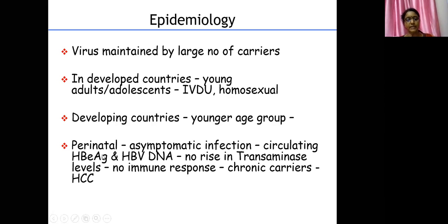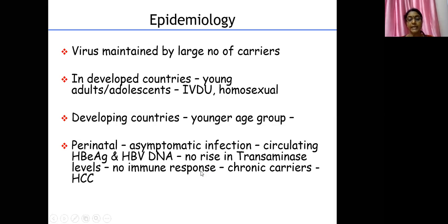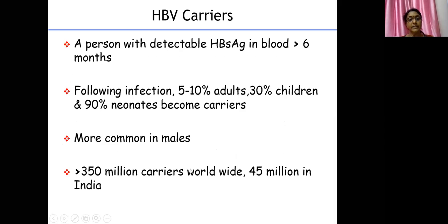In the perinatal age group, the immune system is not well developed, so there is no immune response and the virus cannot be eliminated from the body. This leads to a greater chance of becoming chronic carriers. In these perinatal-infected children, circulating HBeAg and HBV DNA will be present, with no rise in liver enzymes and no immune response — but a chronic carrier state.